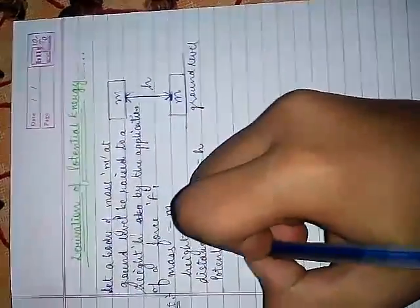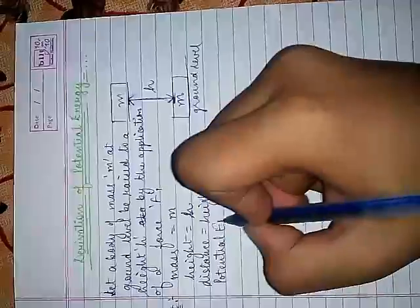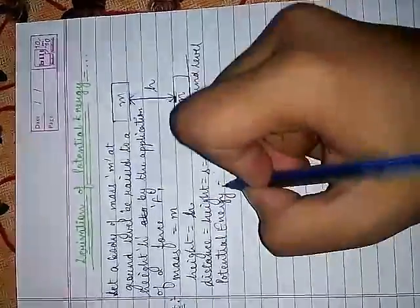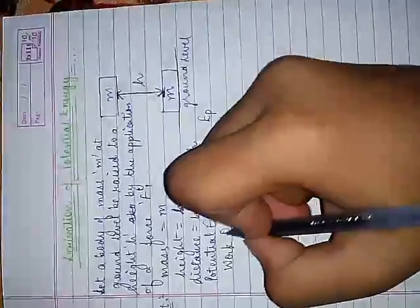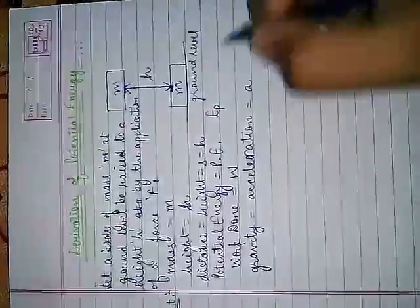Potential energy is equal to P.E. or you could write it as E subscript p. Work done is equal to W. Gravity or acceleration due to gravity g is equal to acceleration equals a.